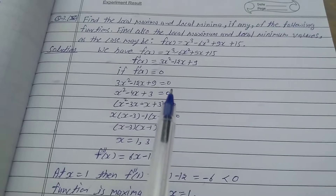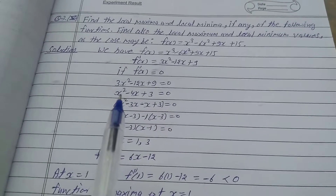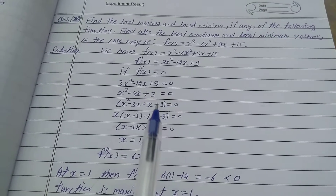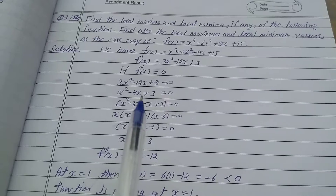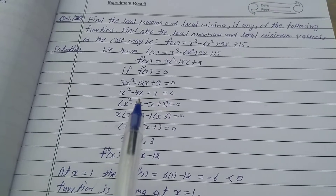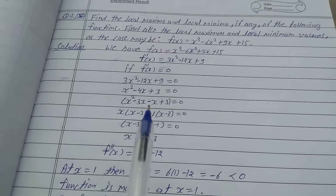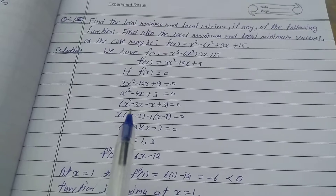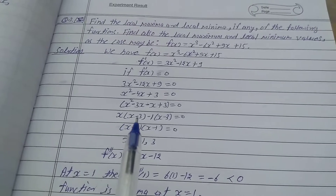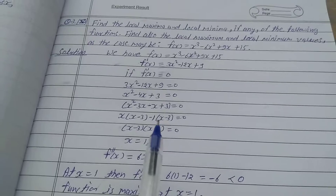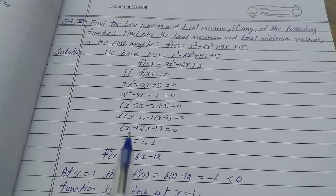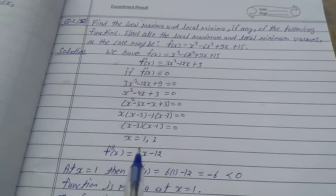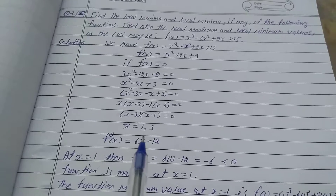Setting f'(x) = 0: 3x² - 12x + 9 = 0. Taking 3 as common: x² - 4x + 3 = 0. Splitting the middle term: x² - 3x - x + 3 = 0, giving x(x - 3) - 1(x - 3) = 0, so (x - 3)(x - 1) = 0. Therefore x = 1 and x = 3.